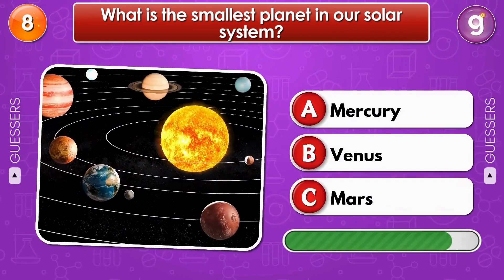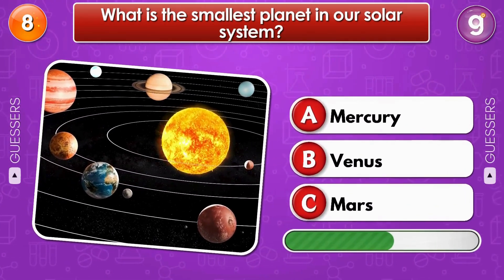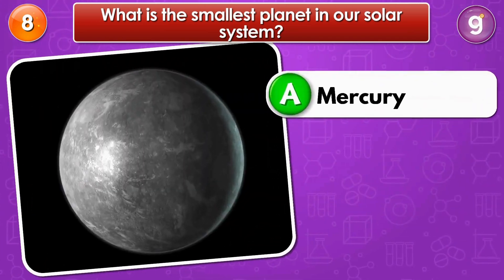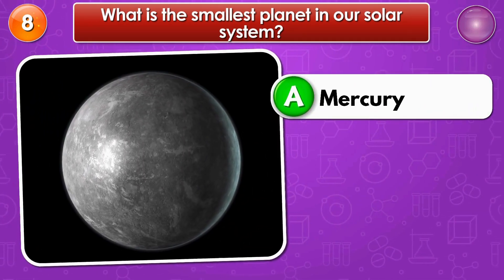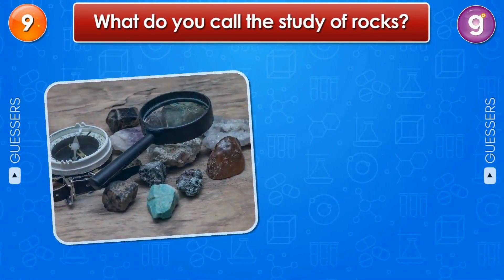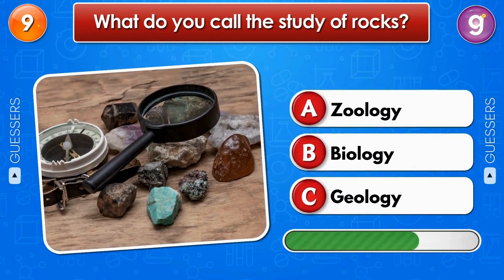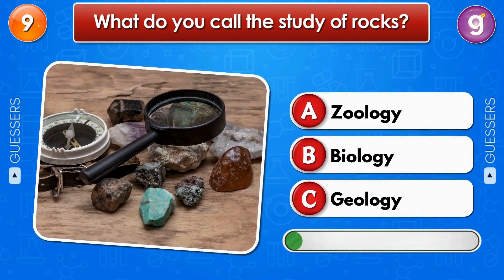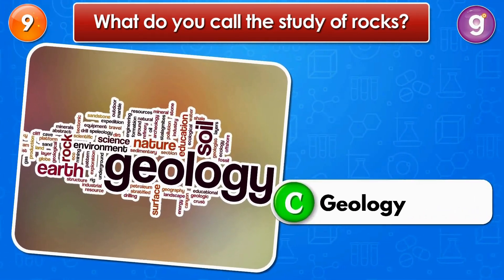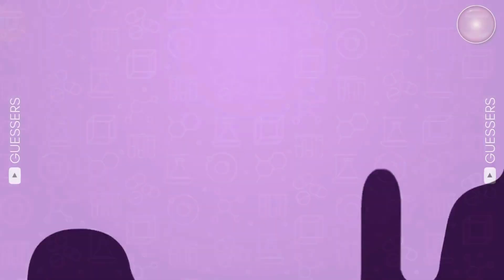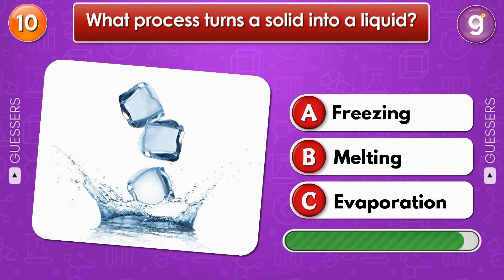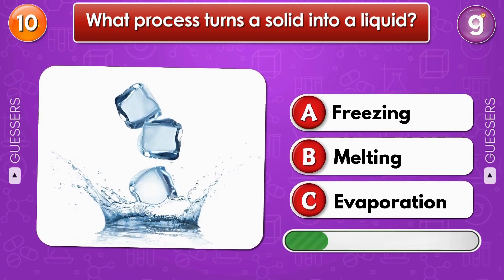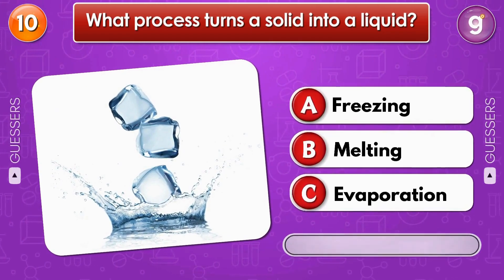Pollen. What is the smallest planet in our solar system? Mercury. What do you call the study of rocks? Geology. What process turns a solid into a liquid?